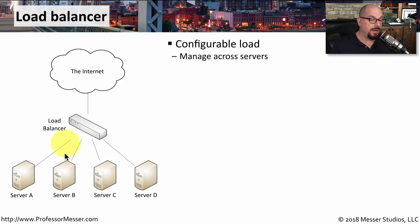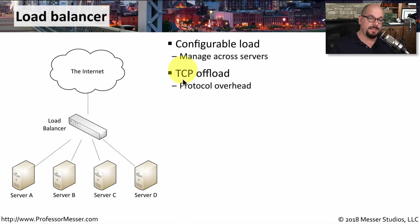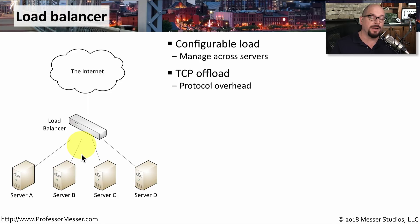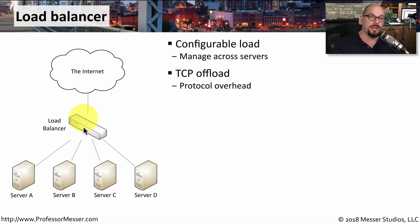The load balancer monitors the response it's getting from these servers. If one server begins to slow down, it can balance the load across the remaining servers. The load balancer might also provide TCP offload — it handles the normal three-way TCP handshake for the end user, while the communication to individual servers behind the load balancer uses a session that's already up and running, removing overhead from the servers.